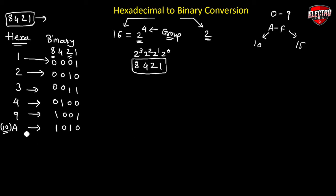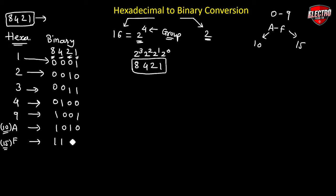To convert F into binary, we must know that F equals 15 in decimal. We use 8 plus 4 (12) plus 2 (14) plus 1 (15), so all bits of the binary number are 1, giving 1111. This way we can convert any hexadecimal number into binary.